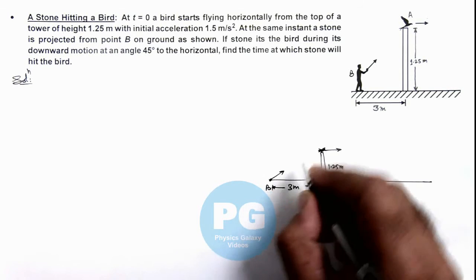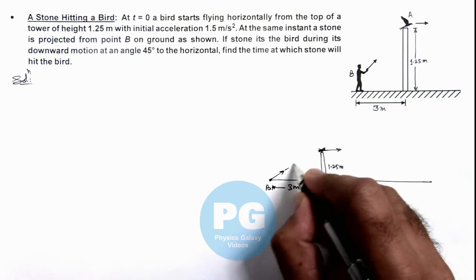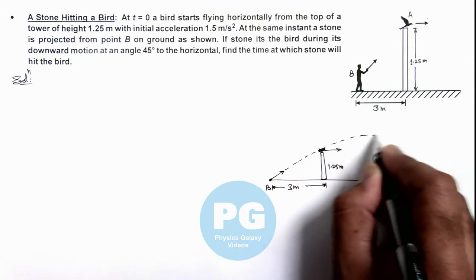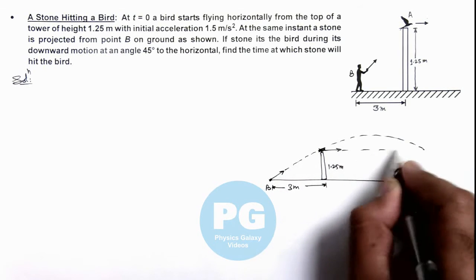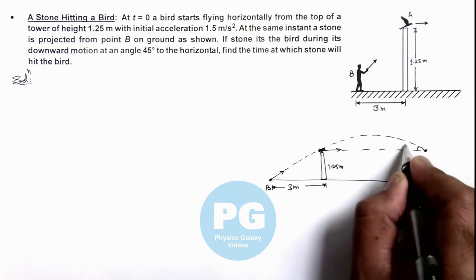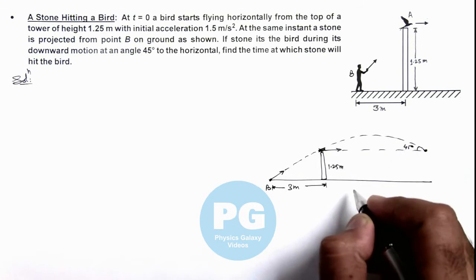The stone is thrown in such a way that it grazes this point and finally hits the bird during the downward motion at an angle 45 degrees.